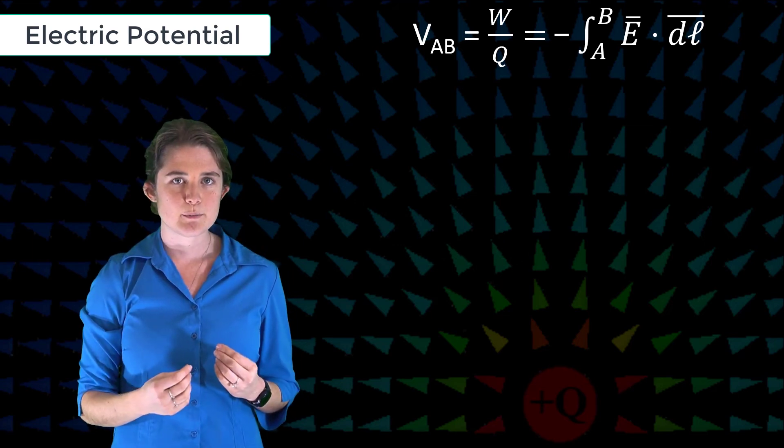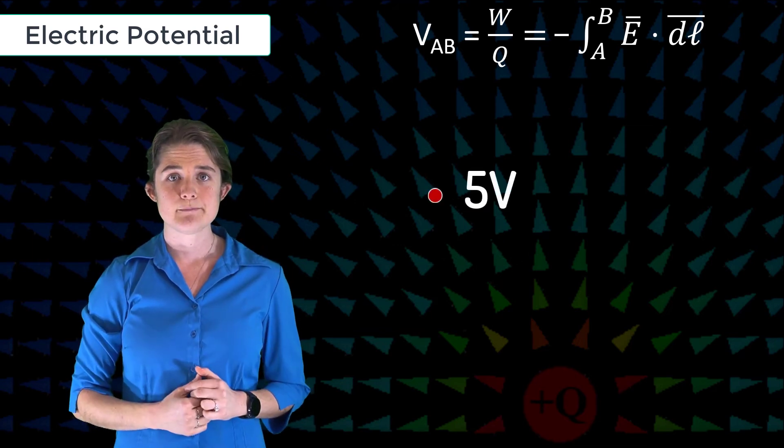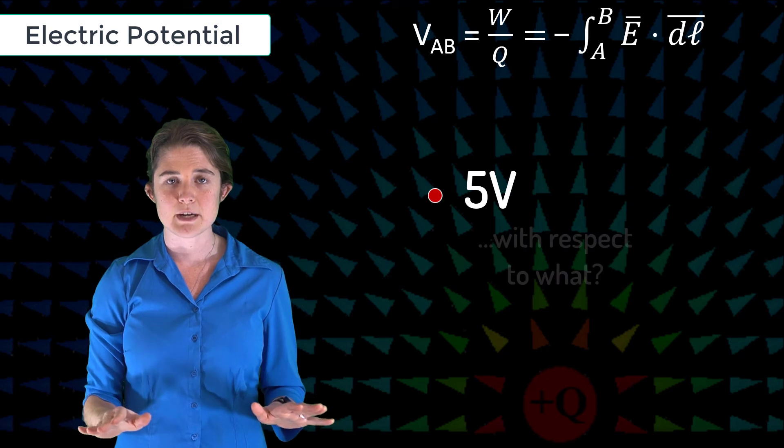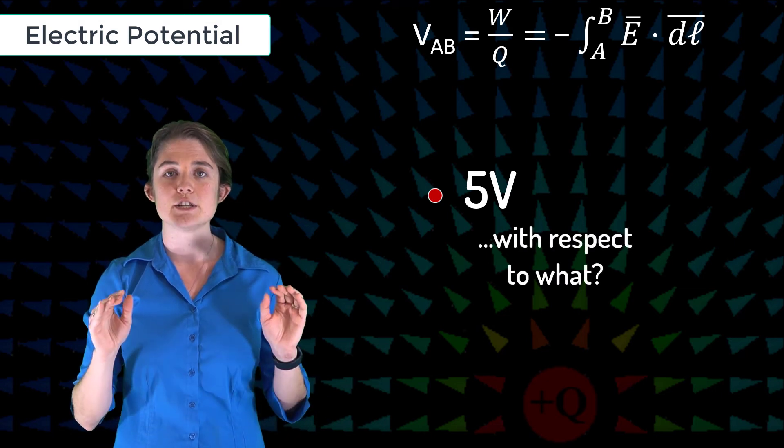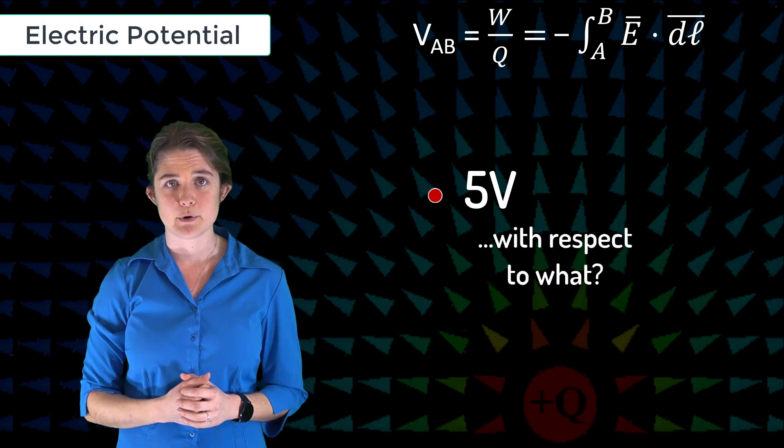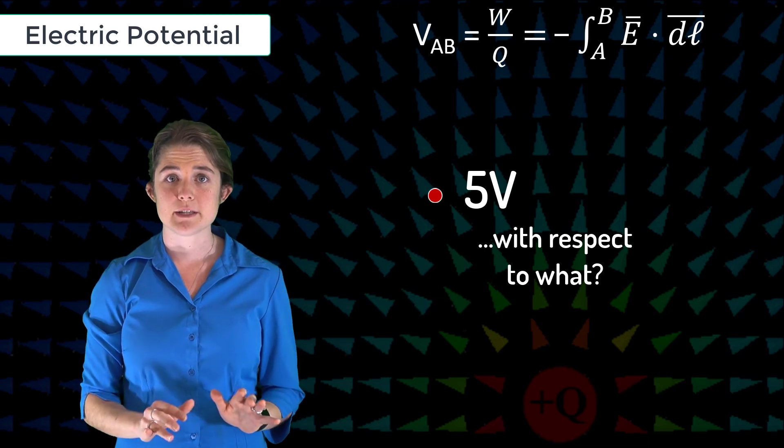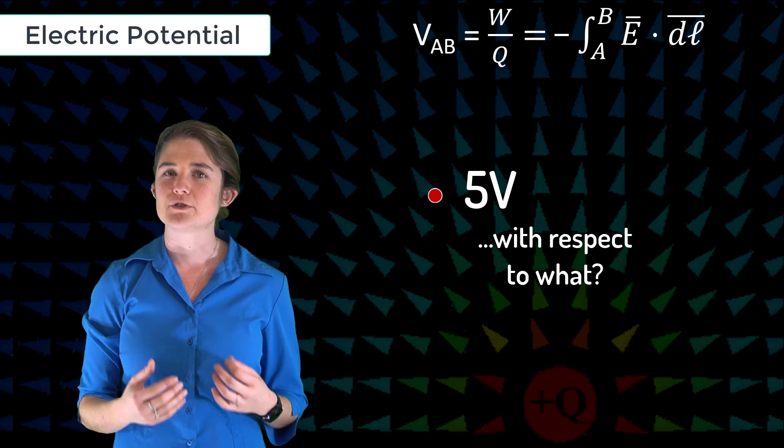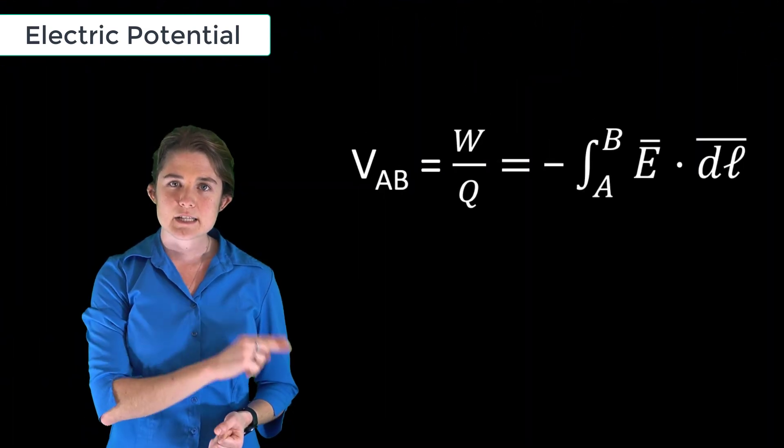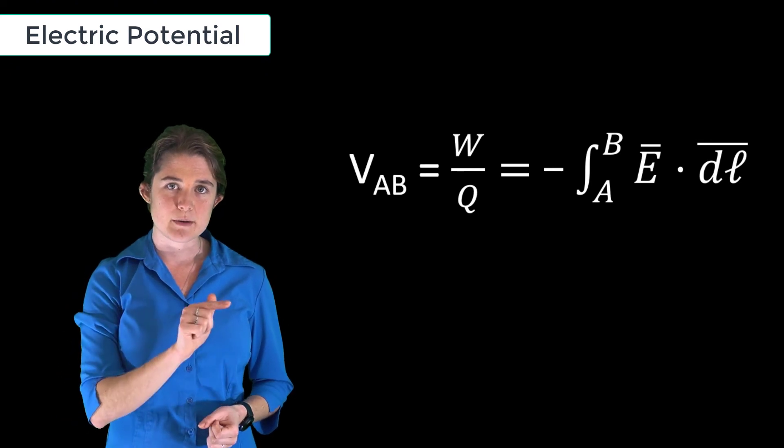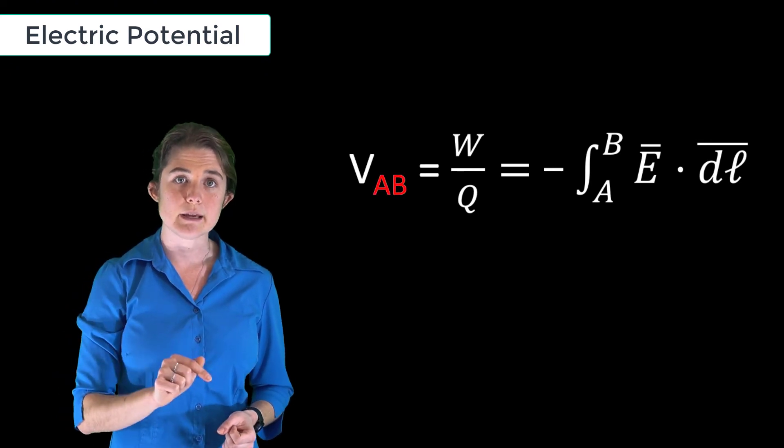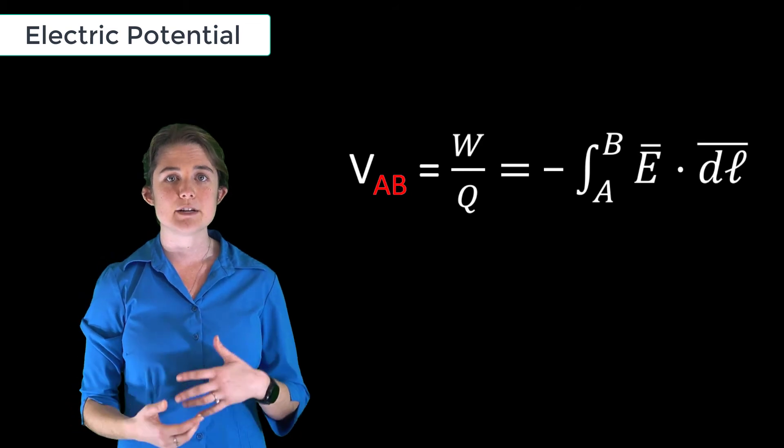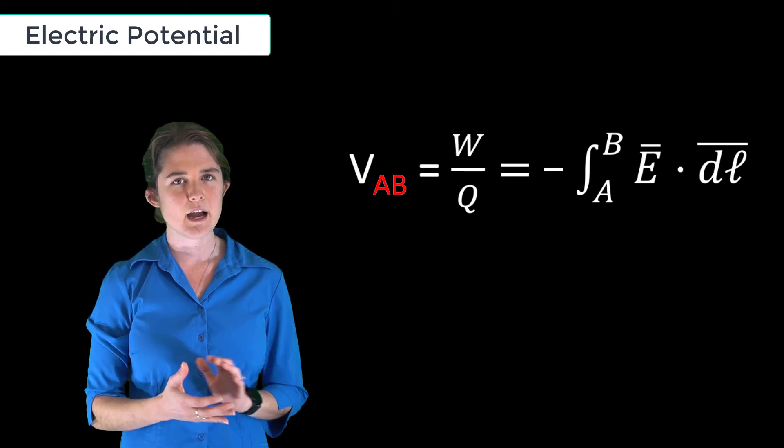If I tell you that a certain point in space is five volts, I have given you no information whatsoever. Voltage is meaningless without a reference point. All voltage measurements must specify where you're measuring from. That's made explicit in this equation by the subscript AB: V_AB is the voltage at B measured from A.